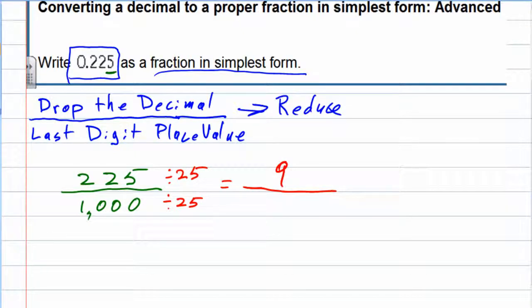And in the bottom, 1000 divided by 25 gives us 40. We would try to reduce that any further if possible but I can't think of anything else that divides evenly into both of those other than one. So we have simplified our fraction.